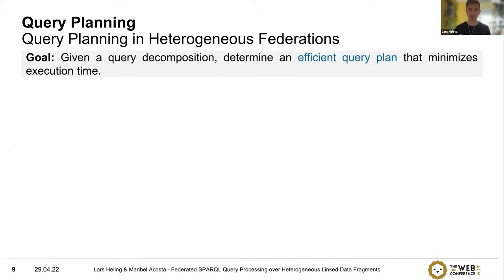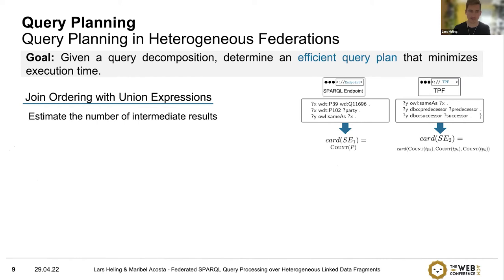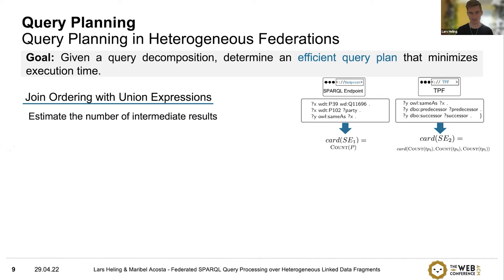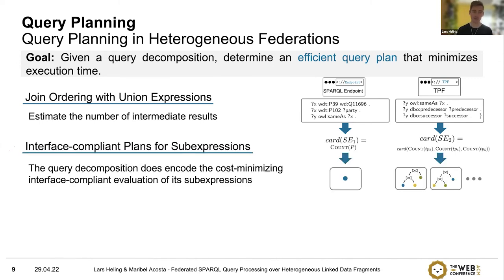Given a query decomposition, the next step is determining an efficient query plan that minimizes execution time. There are considerations specific to heterogeneous federations. The first is join ordering with union expressions, where the main challenge is accurately estimating intermediate results for different types of interfaces. For a SPARQL endpoint, we can use a count query to estimate the number of results, while for a triple pattern fragment server, the client needs to estimate based on more coarse-grained metadata the interface provides. Since some expressions cannot be evaluated directly by a triple pattern fragment server, the query planner must generate interface-compliant plans.